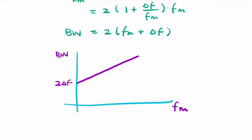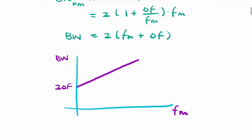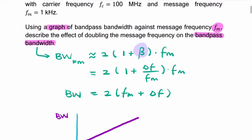So that's the graph. Bandwidth is directly proportional to fm with this offset. Now if we look at our question here...